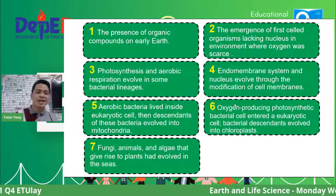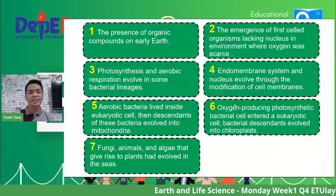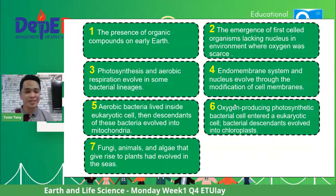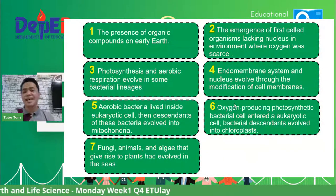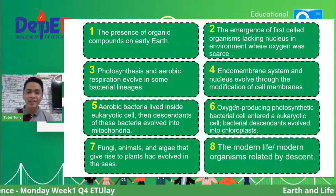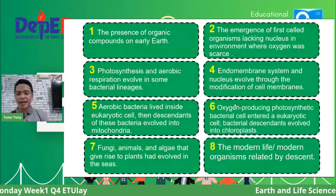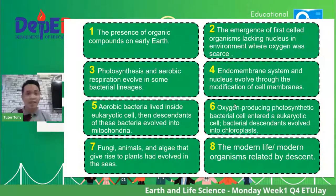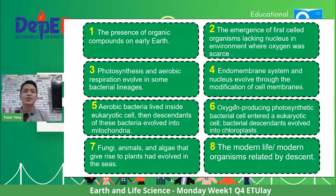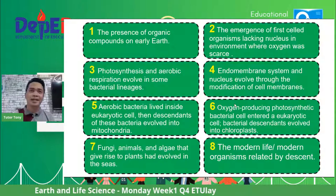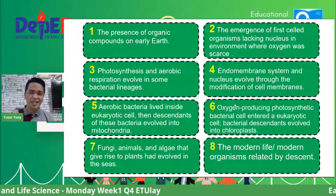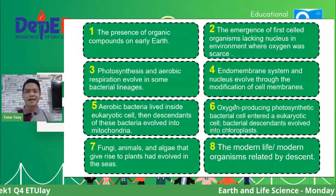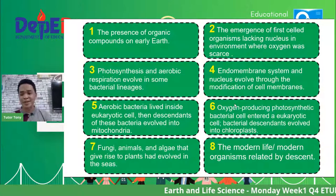Number 7: more complex, higher forms of living organisms emerged — fungi, animals, and algae. Number 8: modern life, including mammals, birds, and surviving reptiles. Those are the exact arrangements. You can take a screenshot or watch the replay later. Let's proceed with the next activity.